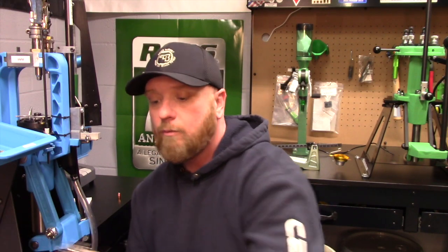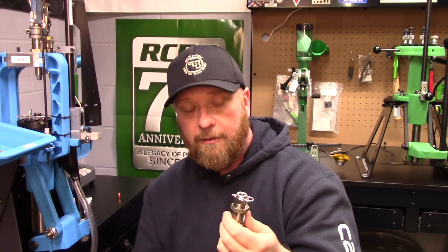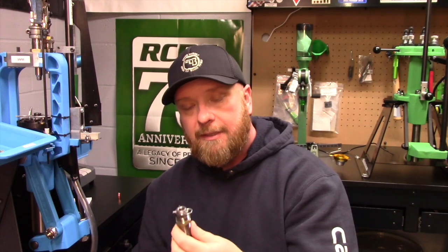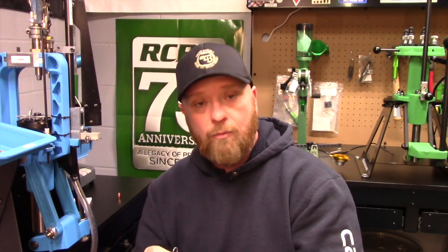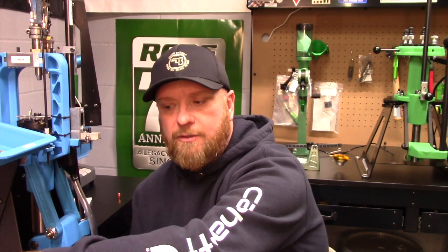The other thing with the Dillon seating die is it's a typical coarse thread die and the struggle with this is that you have those coarse threads, so making small adjustments on your seating depth is a little bit more difficult, but it can totally be done. We're going to get into some details on the seating die here in a minute.